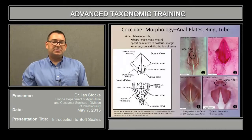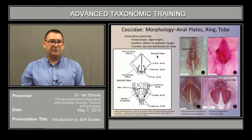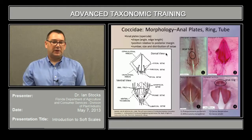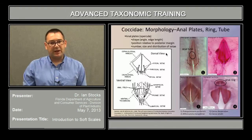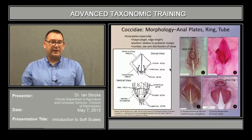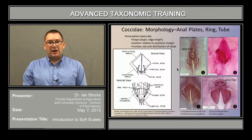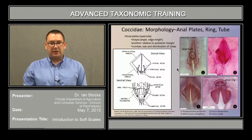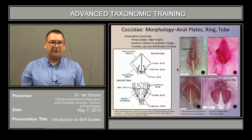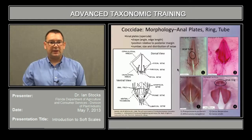Anal plates, with very rare exceptions, are found in the soft scales. They're also known as opercula. The shape, including the angle and the length of the edge, are taxonomically useful, as is the position relative to the posterior margin — i.e., the length of the anal cleft — and the number, size, and distribution of setae found on the surface of the anal plates.